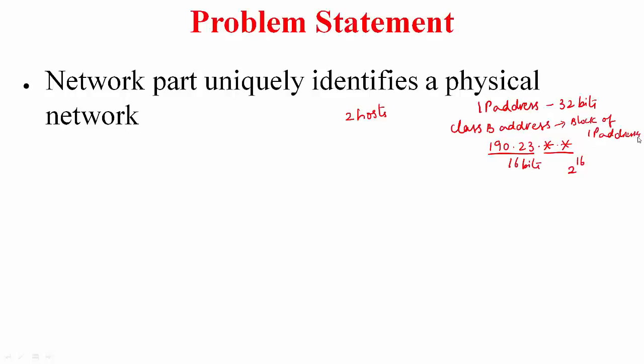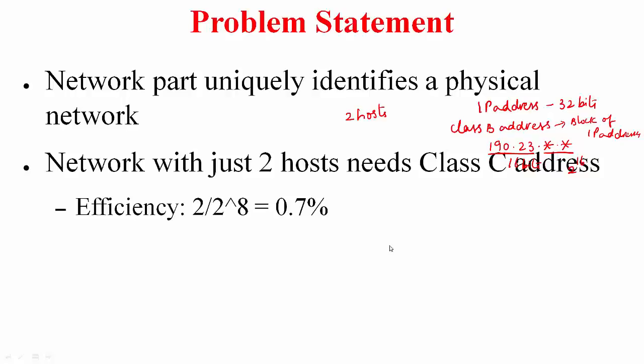So this is something to keep in mind. Now going back to the question for a network with just 2 hosts, what class address will you give and what is the address space efficiency? Now if you have this network with just 2 hosts, it still needs a class C address because class B and class A support lot more hosts. Class C supports the least number of hosts. So you need to give it a class C address. One class C address because it has 8 bits corresponding to the host part can support 2 to the power of 8 hosts. So the efficiency is you are using 2 addresses out of 2 to the power of 8, that means you have an efficiency of 0.7 percent, very low efficiency.